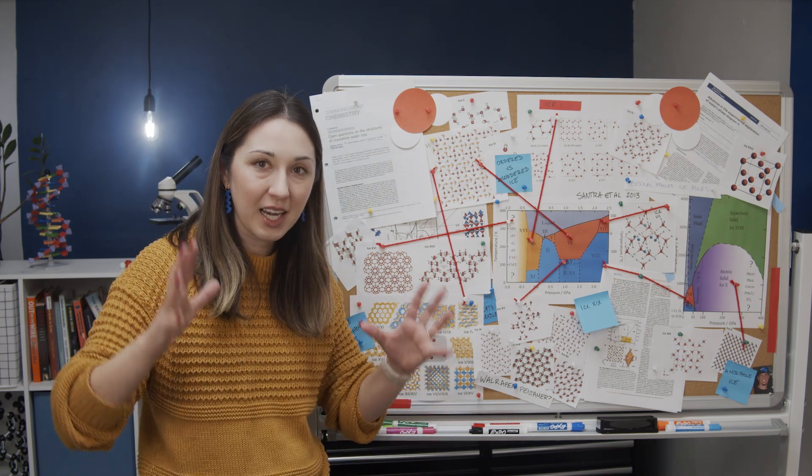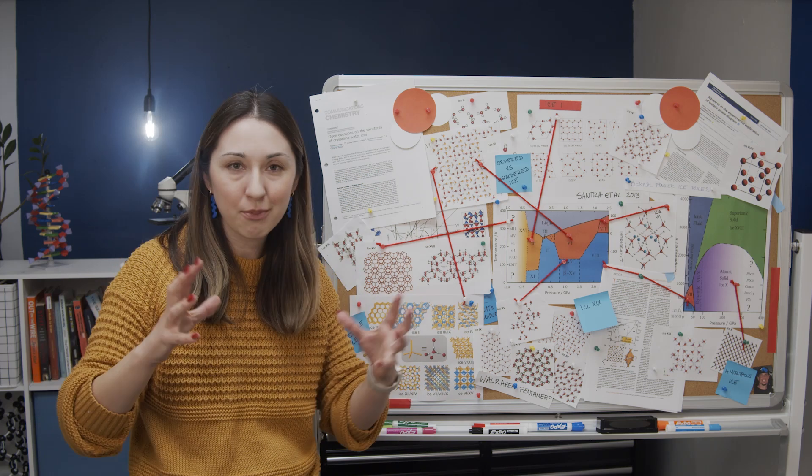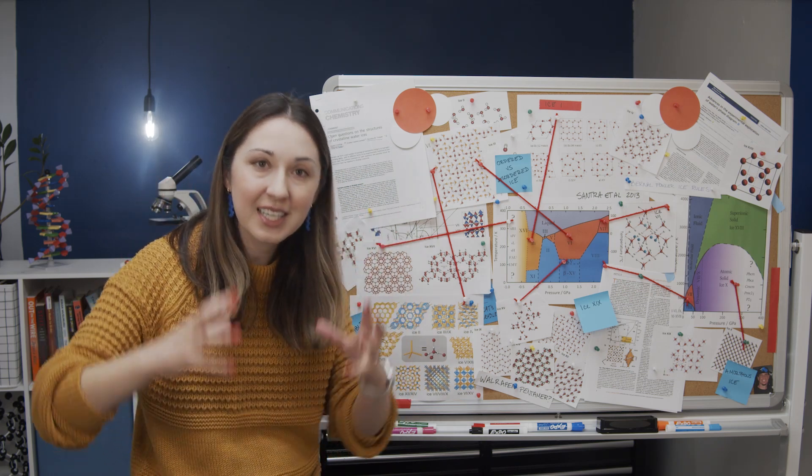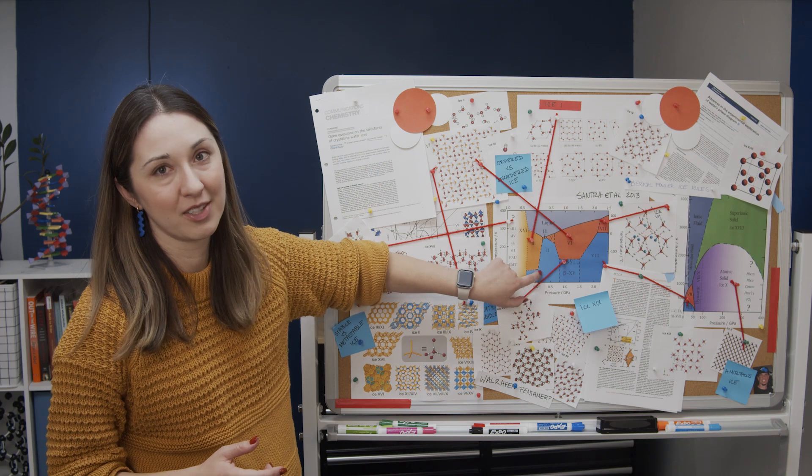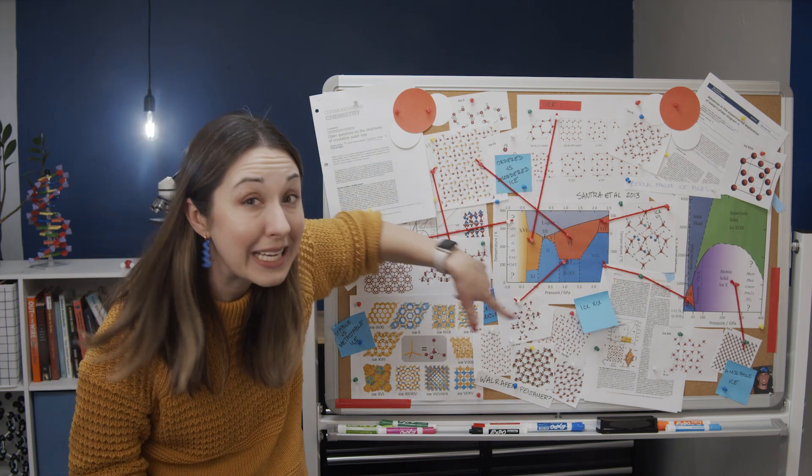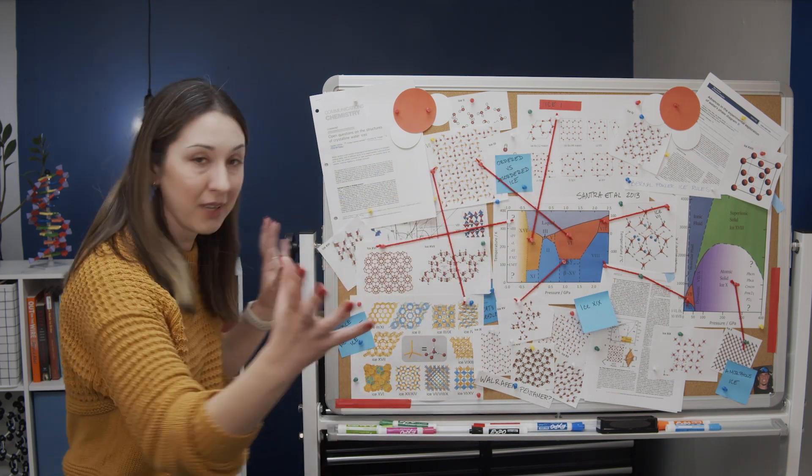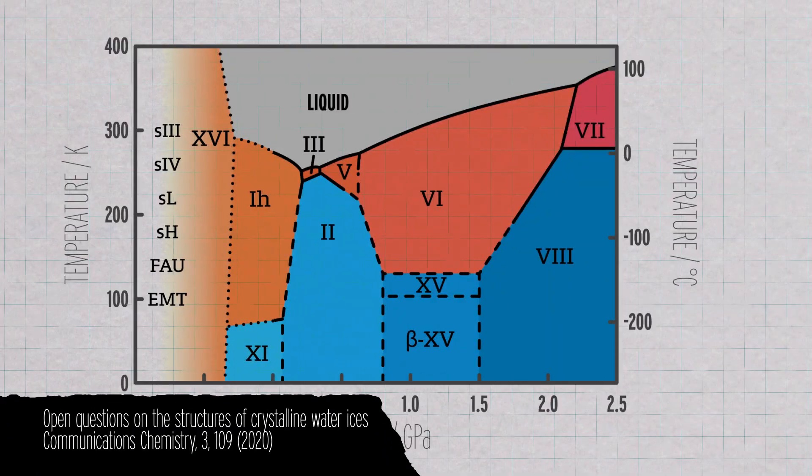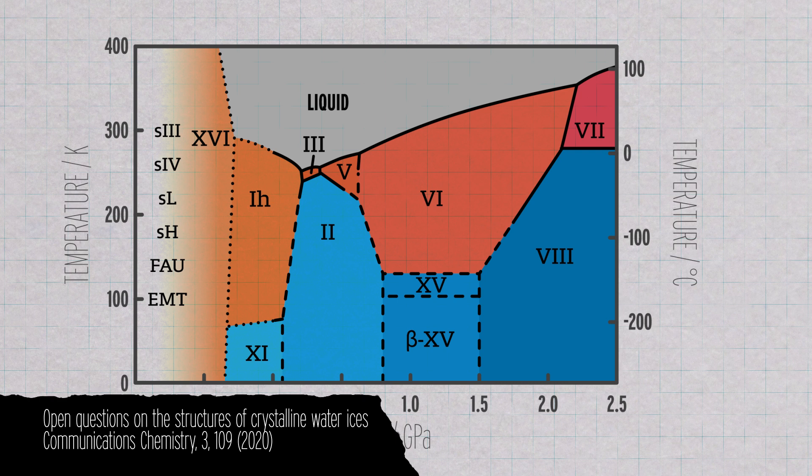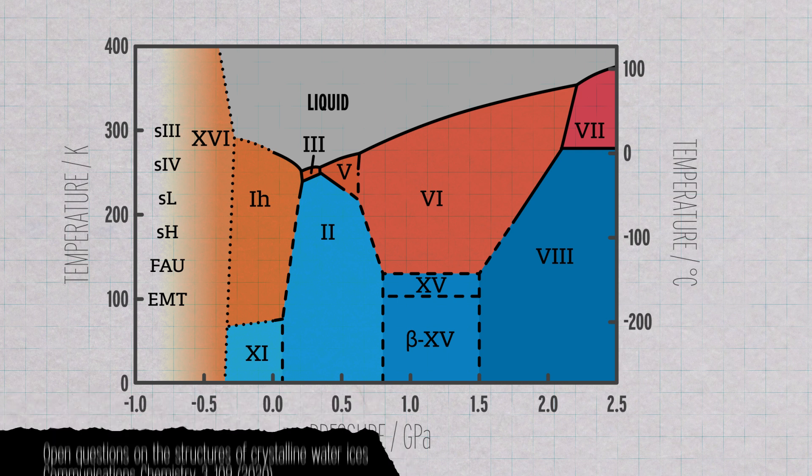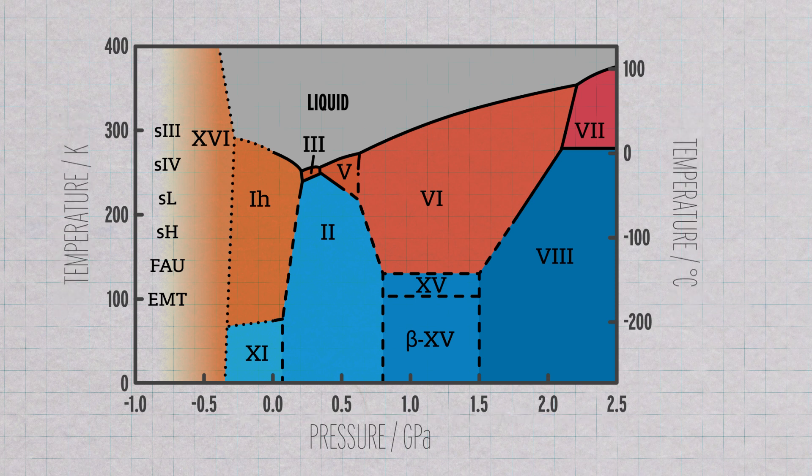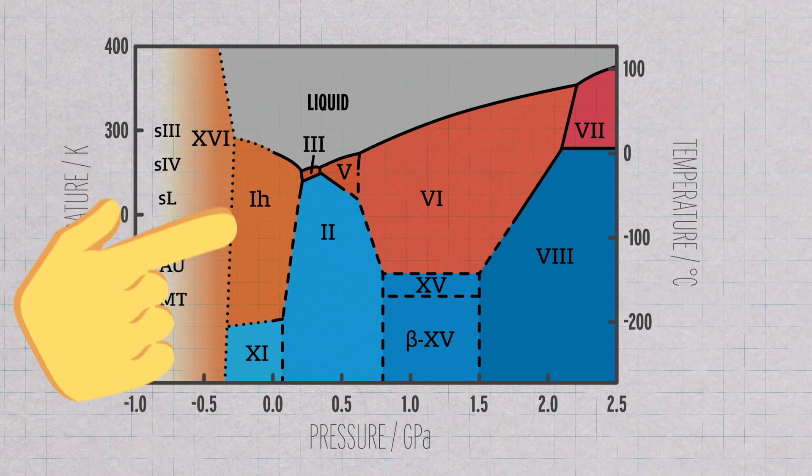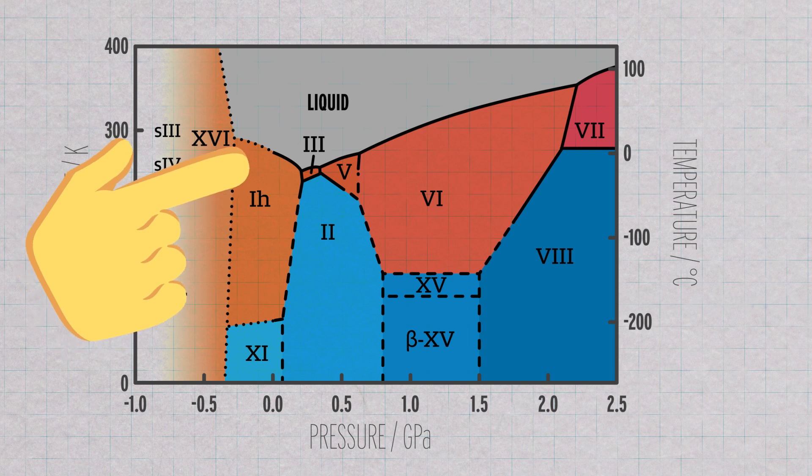But what happens if you subject ice to all kinds of temperatures and pressures to force it into other configurations? That is what this diagram is all about. This is key to everything we're going to talk about. What we've got here are phases of ice at different temperatures and pressures. The x-axis is pressure from low to high, and the y-axis is temperature. Here in orange, we have ice one H at pretty normal ambient temperatures and pressures.